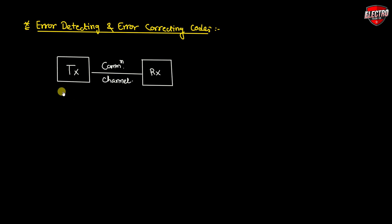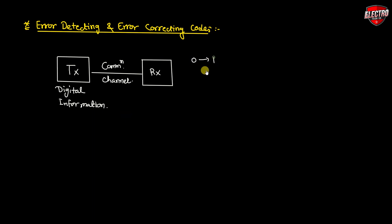When we transmit digital information in the form of binary from the transmitting station to the receiving station, an error may occur due to unwanted signals, which are also known as noise. This means a signal corresponding to 0 may change to 1, or 1 may change to 0, due to the presence of noise.